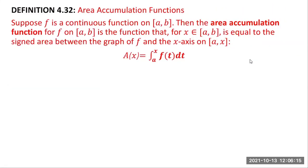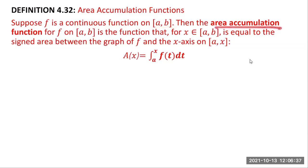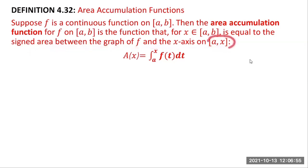Let's start with Definition 4.32: Area Accumulation Functions. Suppose f is a continuous function on the closed interval [a, b]. Then the area accumulation function for f on [a, b] is the function defined for all x in [a, b] as A(x) = the definite integral from a to x of f(t) dt.